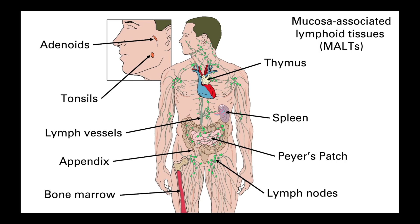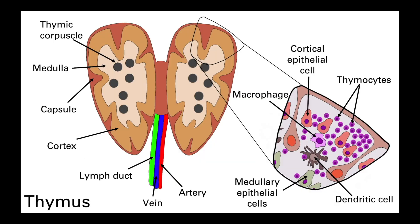Even the appendix, which we are often told is useless in humans, is in fact well placed to destroy any pathogens that have evaded the other gut defenses. The thymus plays a fundamental role in immune system development. Unlike the lymph nodes that facilitate interactions between pathogens and immune cells, the thymus is the site of early T lymphocyte development.